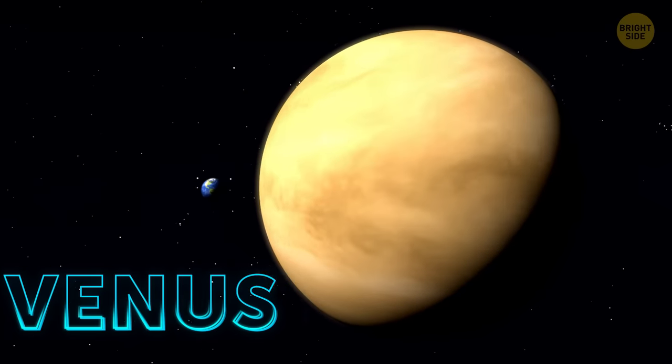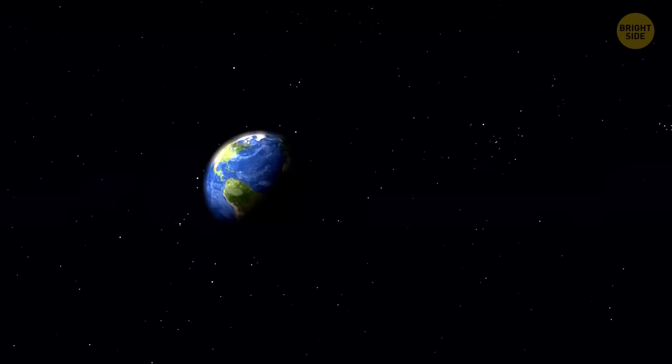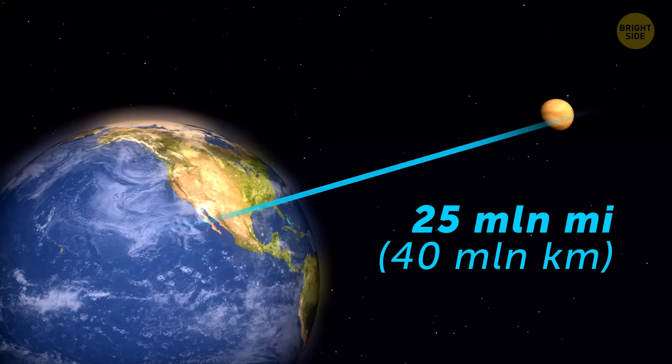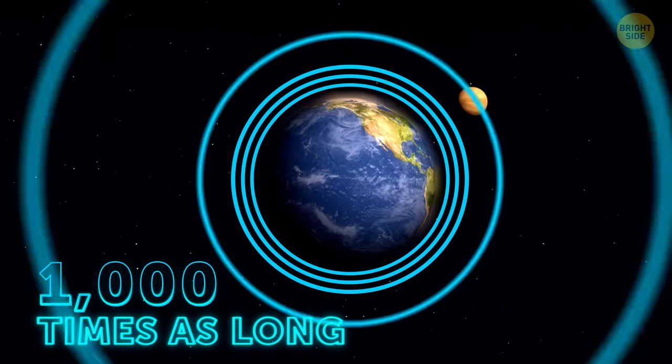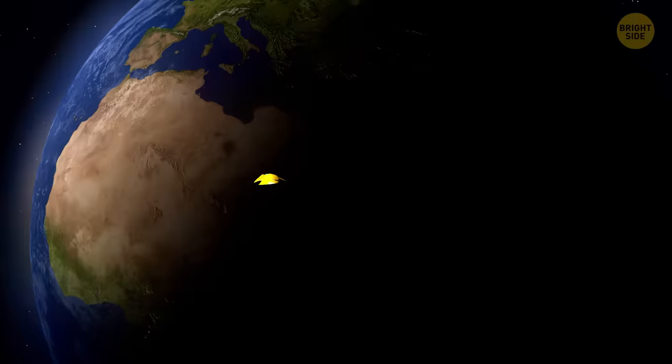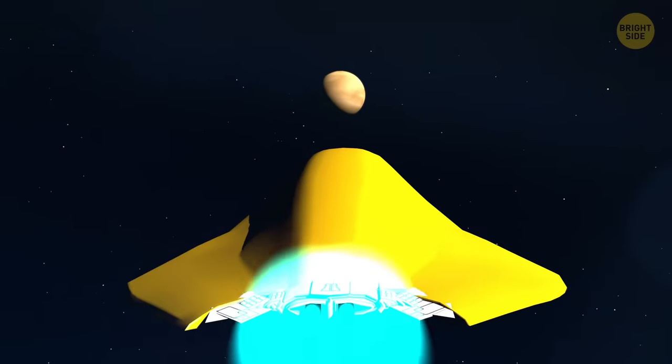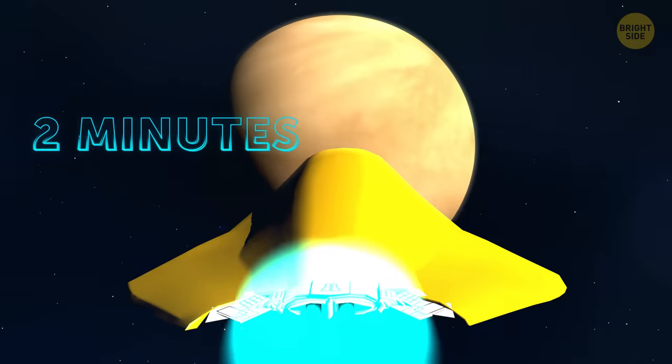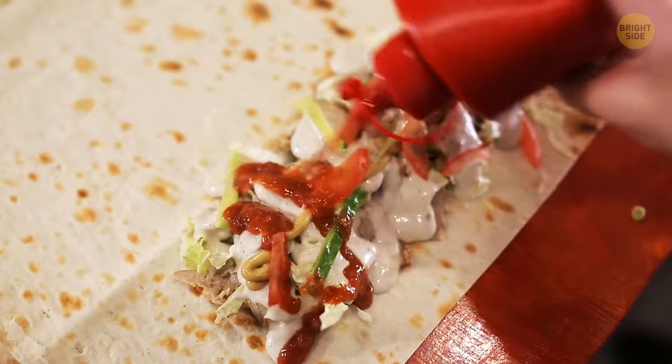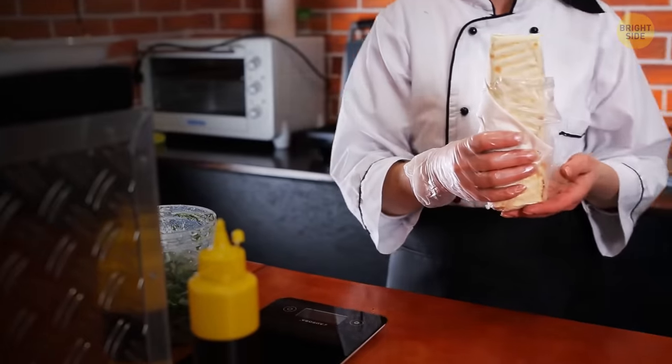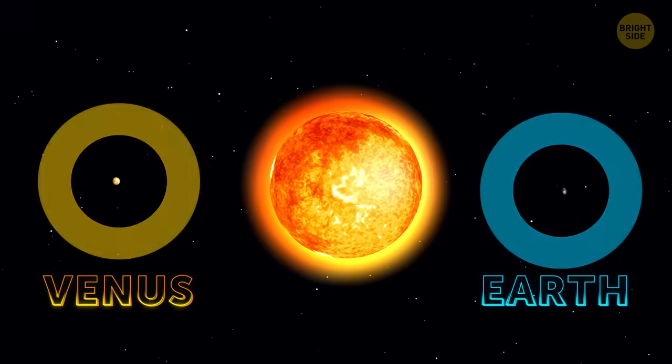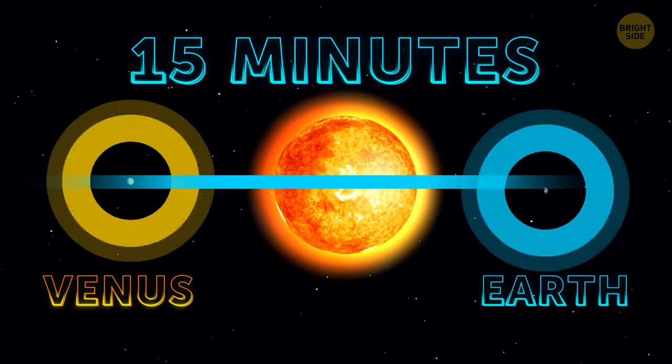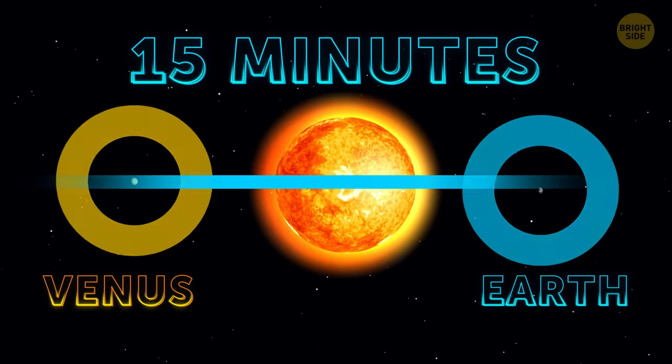Venus is the closest planet to Earth. On average, the distance between the morning star and our planet is 25 million miles. That's 1,000 times as long as the distance around Earth. Still, while traveling at the speed of light, you'd need just 2 minutes before you landed your spacecraft on Venus. It might be just enough time to munch on a big burrito. On the other hand, if Venus was on the other side of the Sun, it would take you 15 minutes to reach it, and that time is enough to have a proper meal.